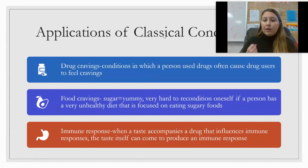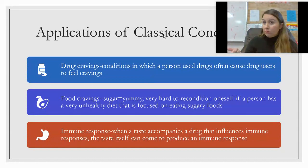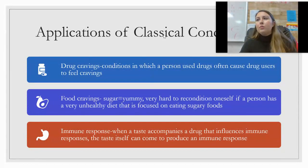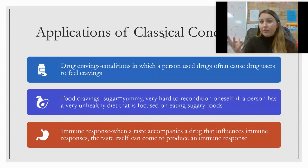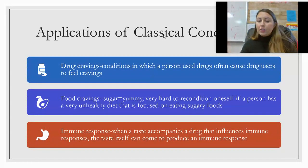Another application is food cravings. Sugar is very hard to recondition away from if you have an unhealthy diet focused on sugary foods, because the brain's dopamine reward center is stimulated over and over again. Your brain has associated sugar with feeling good, making it very hard to train yourself to not want it.